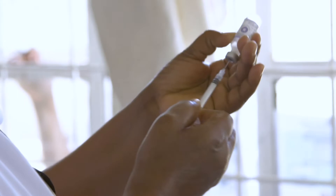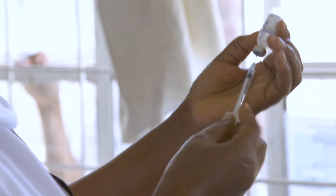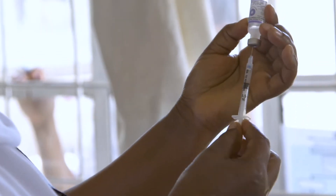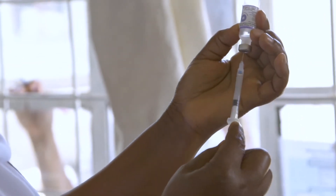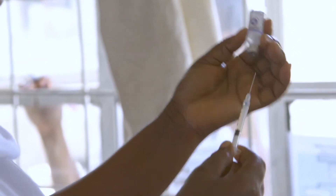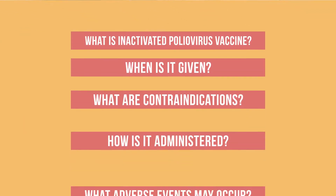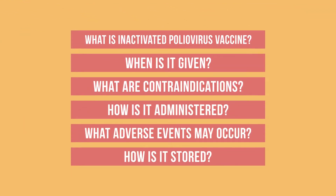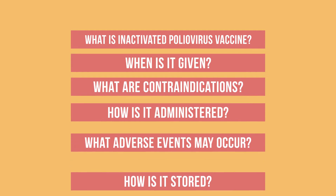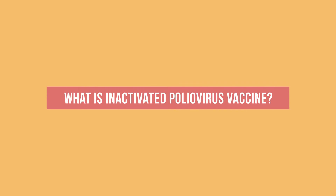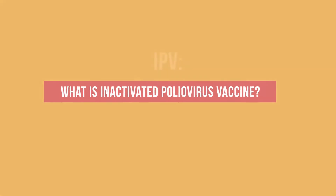IPV is an inactivated poliovirus vaccine and is recommended for routine immunization in many countries. In this video, we will answer a few key questions about IPV. First, what is inactivated poliovirus vaccine?